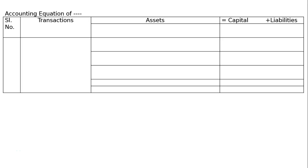This question requires us to prepare an accounting equation from the following transactions. We have to draw the accounting equation with serial number, transactions, and the format: Assets = Capital + Liabilities. After reading the question, we have assets like cash, stock, debtors, capital, and creditors, and we write the rupee symbol below each item.